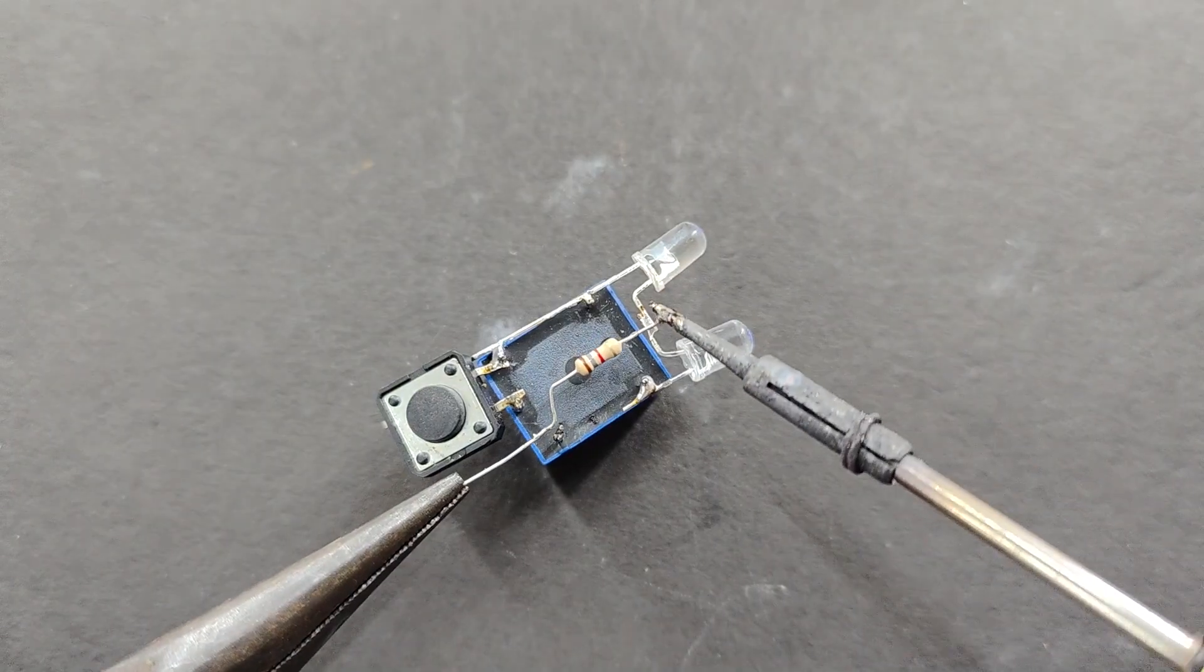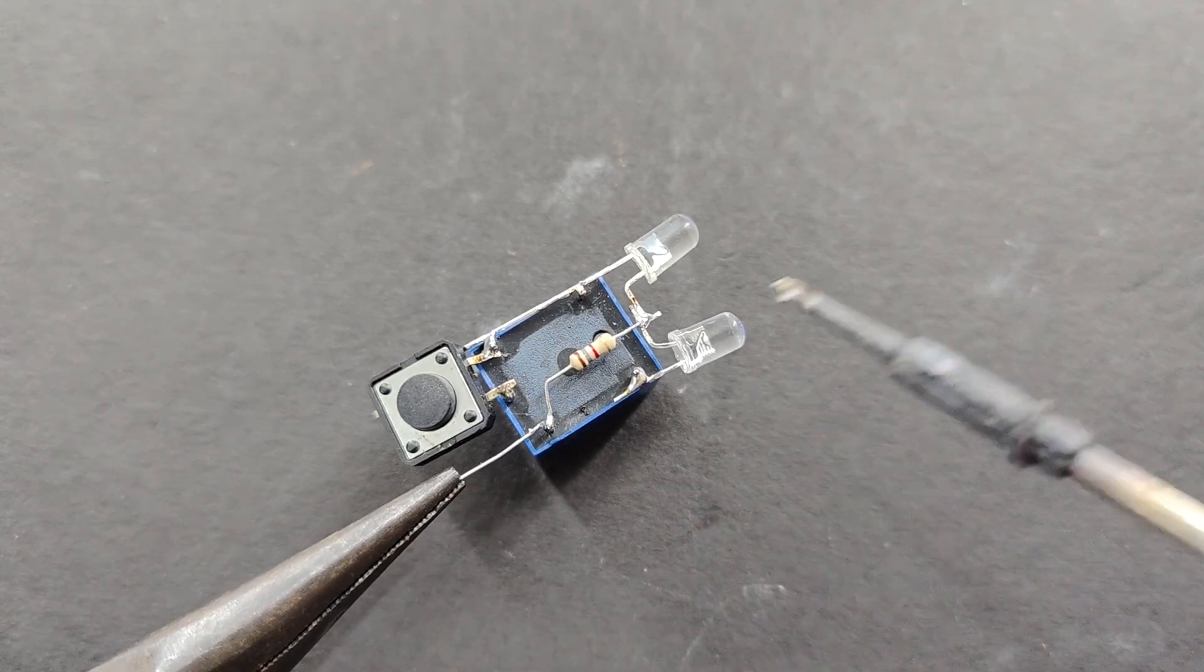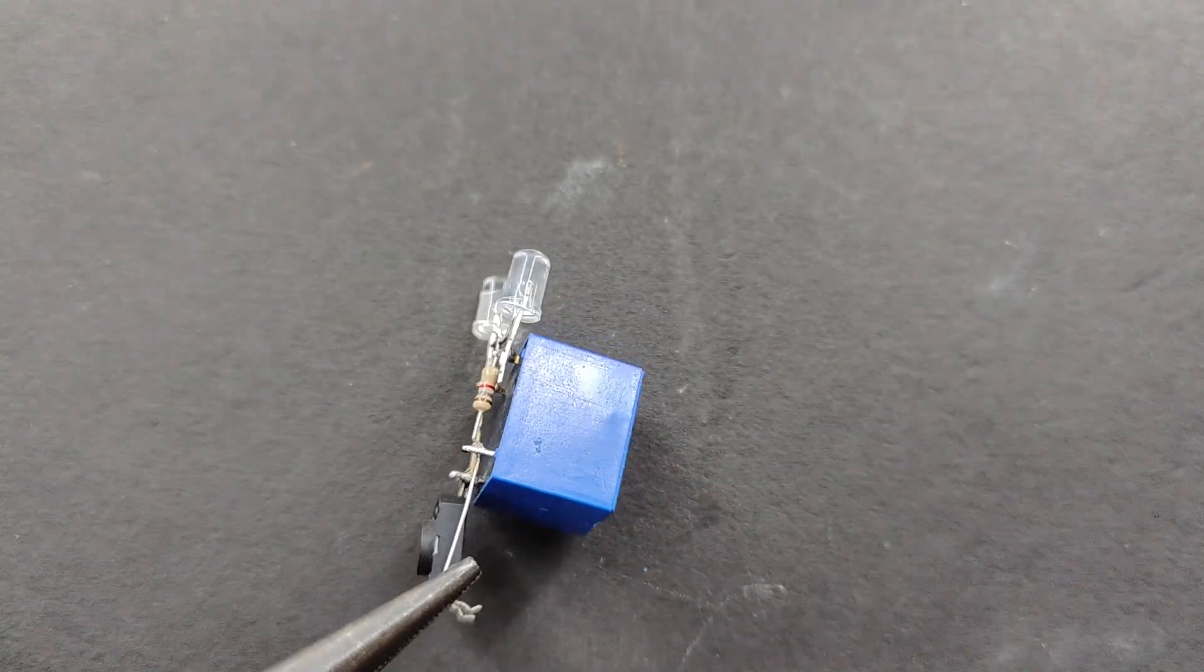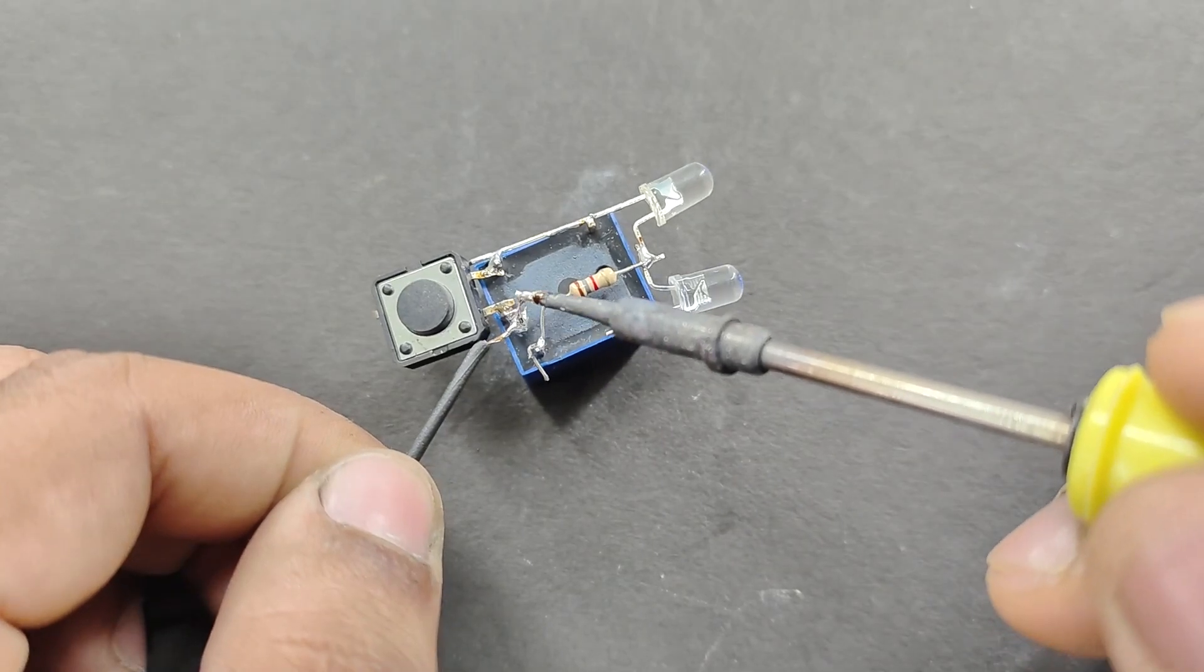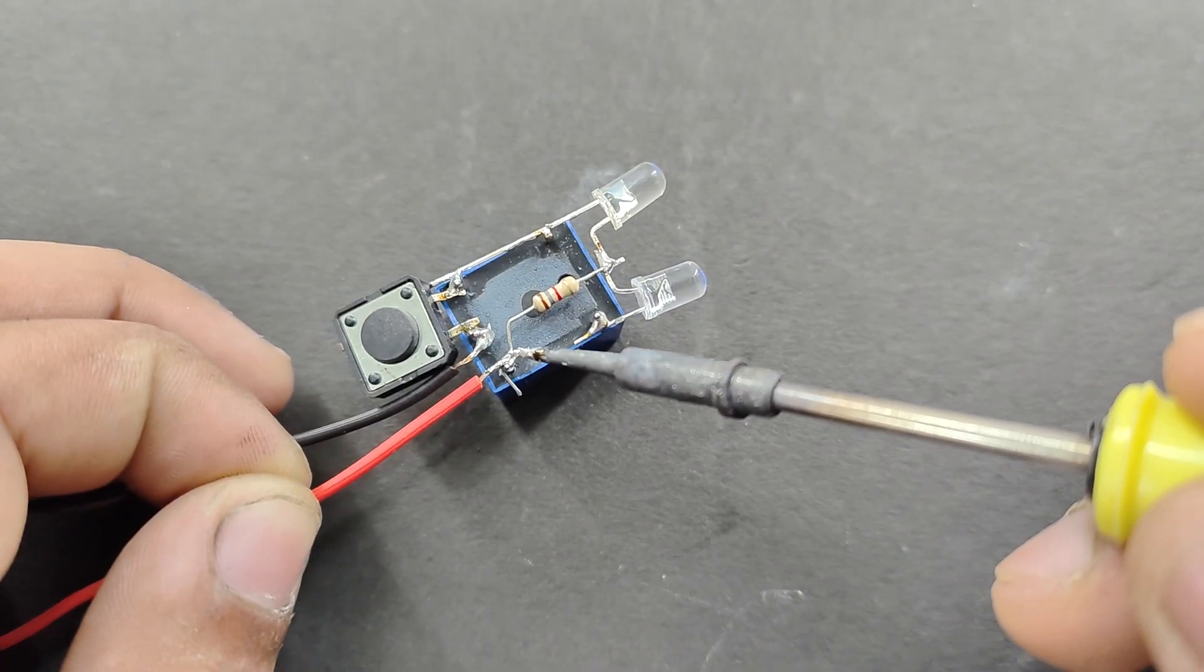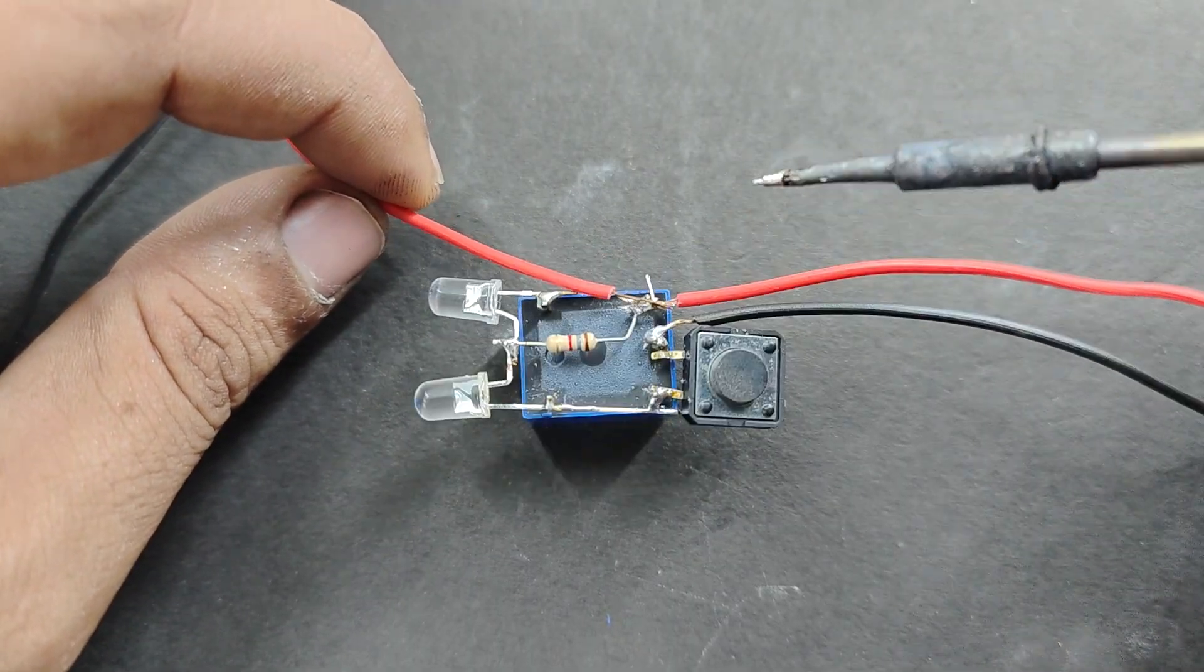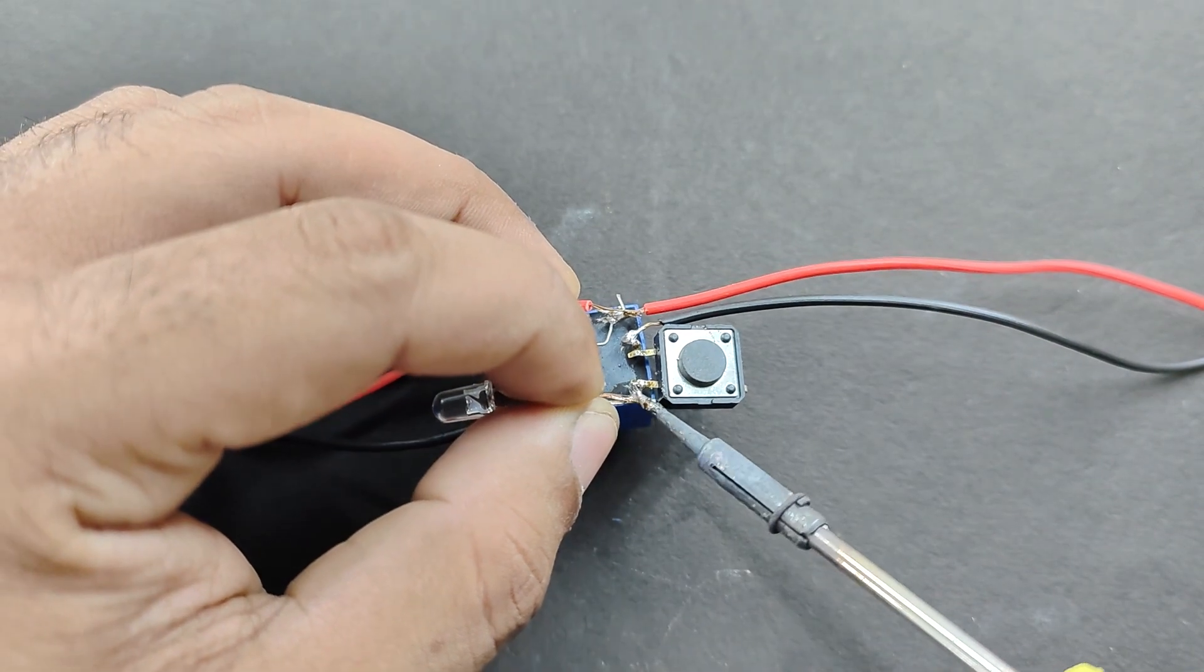After that, add a 1.8 kohm resistor with one end connected between positive terminals of red and green LEDs and the other end connected to pin number 2 of the relay. Now connect the negative input line to pin number 3 and positive input line to pin number 2 of the relay. Finally, take the positive output from pin number 2 and the negative output from pin number 1.